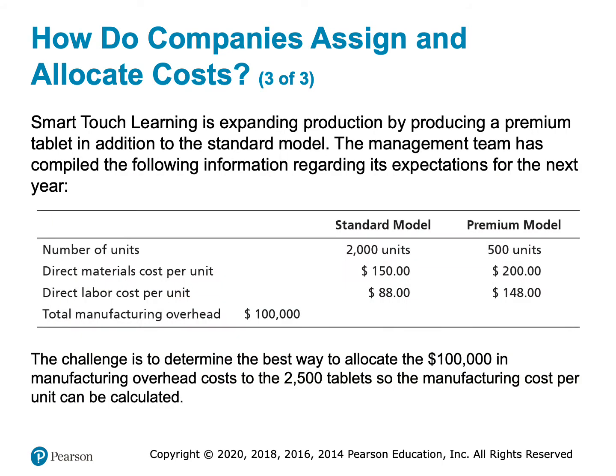We're going to walk through an example here. We're Smart Touch Learning — we make tablet computers, those iPad and Microsoft Surface kind of tablets. We now have two different models: the standard model and the premium model. We're going to allocate overhead cost to these two models using several different methods so we can figure out which is best. We're currently making 2,000 units of the standard model and 500 units of the premium model.